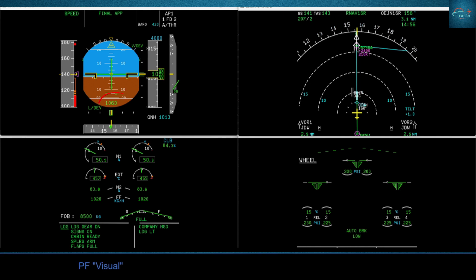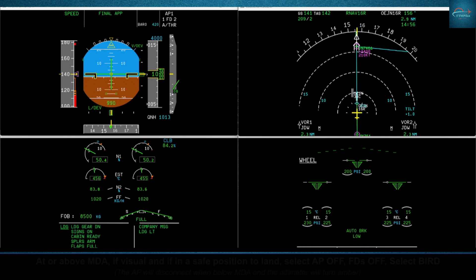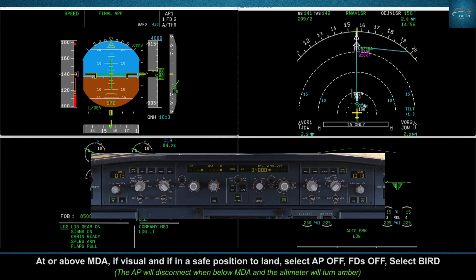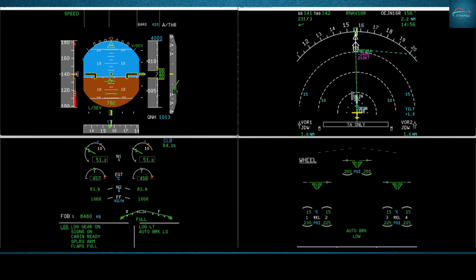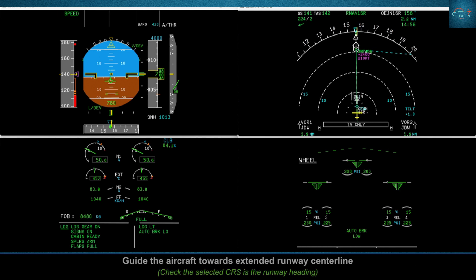Visual. Confirm visual. At or above MDA, if visual and in a safe position to land, select autopilot off, flight directors off, select bird. Guide the aircraft towards the extended runway centerline.